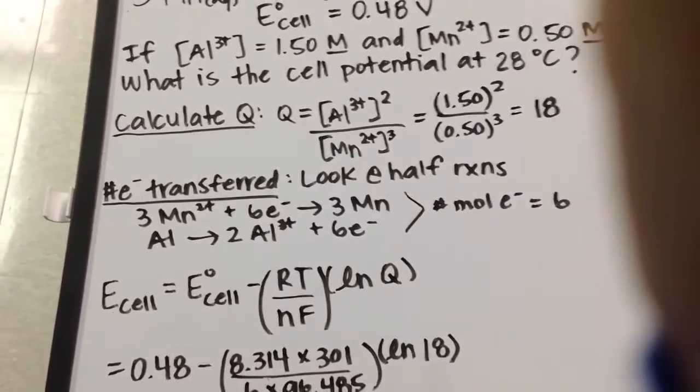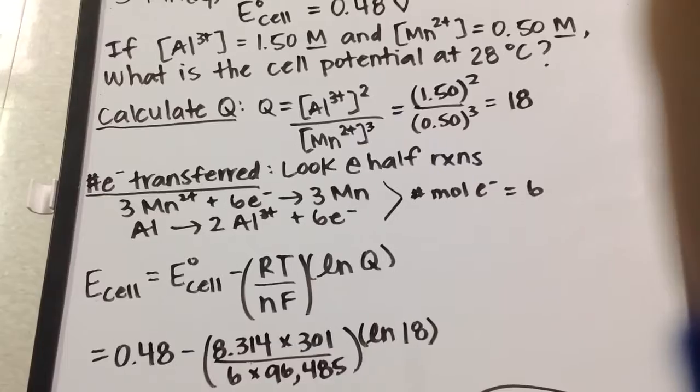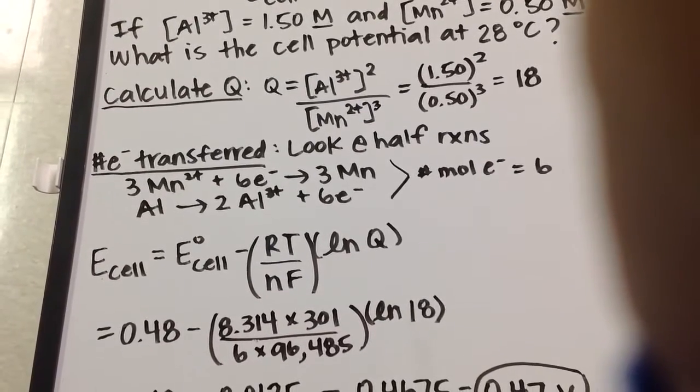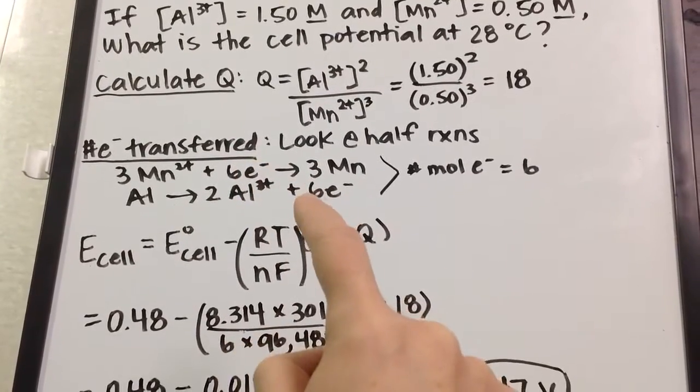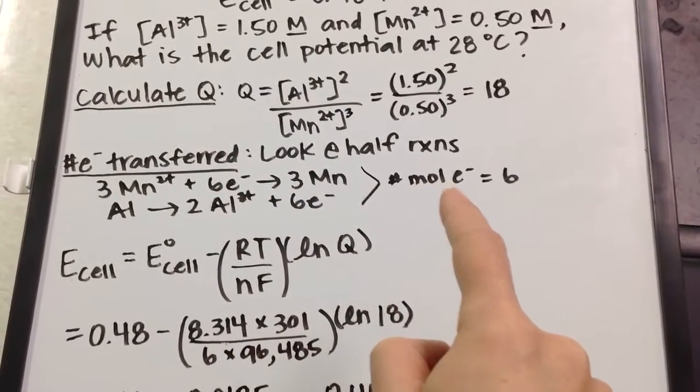Now we need to figure out how many electrons are transferred in this electrochemical process. We look at the half reactions. From our balanced half reactions, we see that 6 electrons are transferred, so the number of moles of electrons transferred is 6.